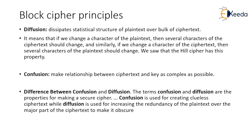Diffusion dissipates the statistical structure of plaintext over the bulk of ciphertext — if we change a character of the plaintext, several characters of the ciphertext should change, and vice versa. This was seen in the Hill cipher example discussed in the previous module. Confusion makes the relationship between the ciphertext and the key as complex as possible, so that no attacker can determine the key.